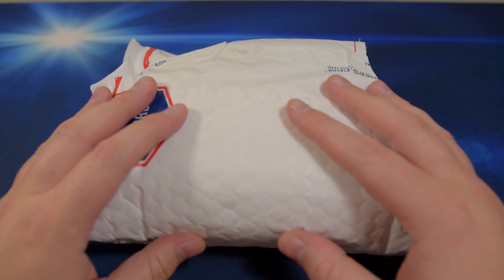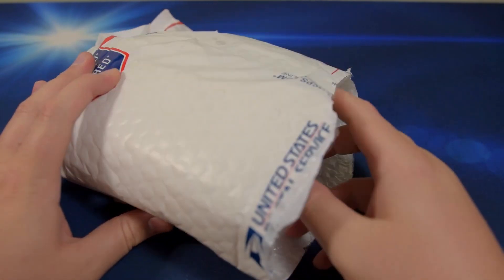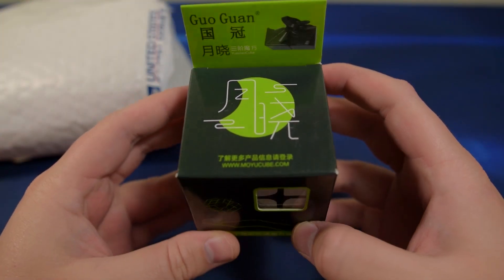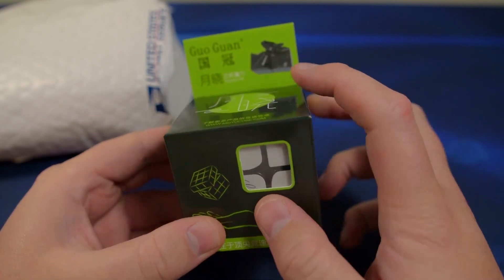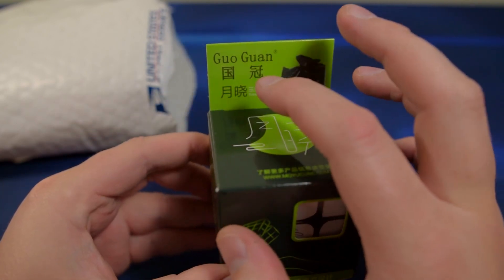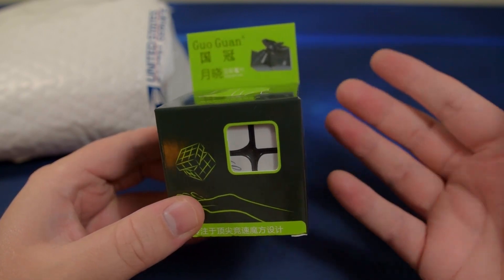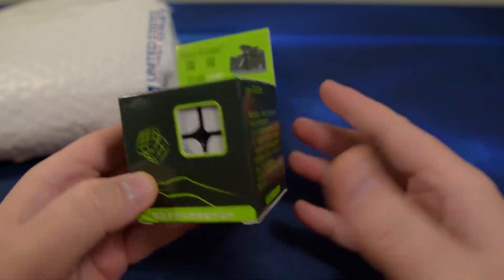So I'm not 100% sure what's in this. I haven't checked the email recently, so let's look at it here. There is the GuoGuan Yuxiao. I know I'm saying that wrong, but I think GuoGuan is how you say it with a little bit different inflection.